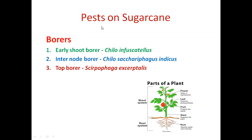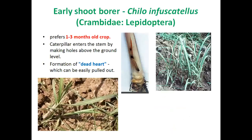Coming to sugarcane pests, insects are majorly categorized into two types: borers and sucking pests. Borers make boreholes into the plant system and affect normal function. Sucking insects suck sap from leaves, excrete large amounts of honeydew, and sooty mold fungus develops on the leaf, reducing photosynthetic area. There are three important borers attacking sugarcane: first, early shoot borer Chilo infuscatellus; second, internode borer Chilo sacchariphagus indicus; and third, top shoot borer Scirpophaga excerptalis.